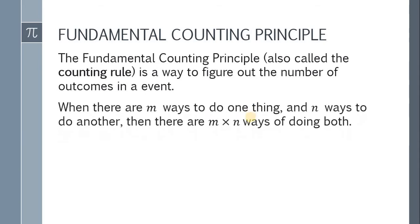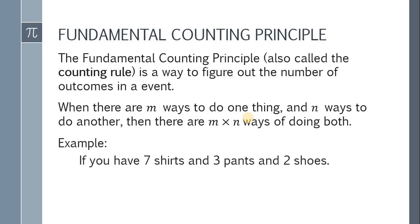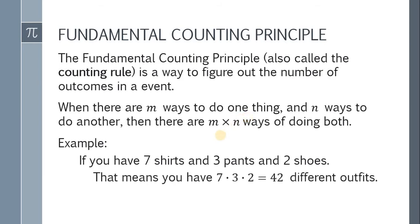When there are m ways to do one thing and n ways to do another, there are m times n ways of doing both. For another example, if you have 7 shirts, 3 pants, and 2 shoes, according to the fundamental counting principle, there are 7 times 3 times 2 different outfits — therefore, you have 42 different outfits.